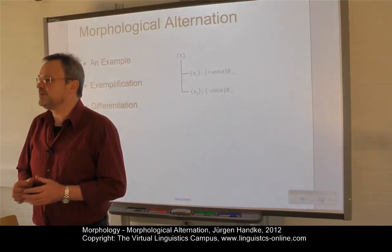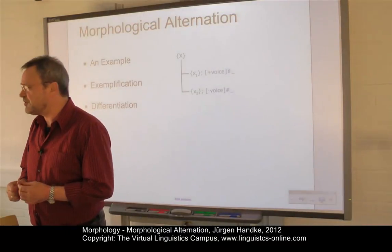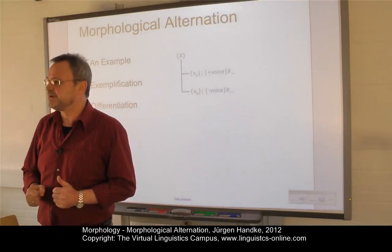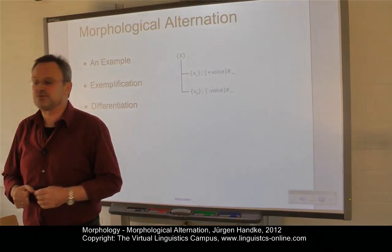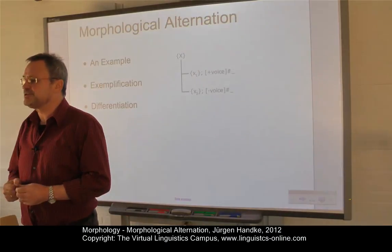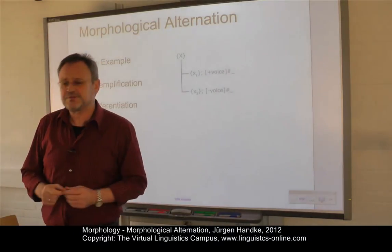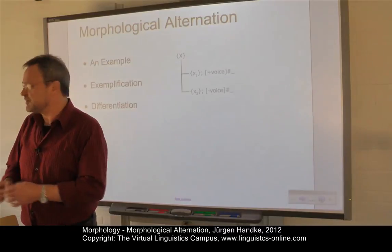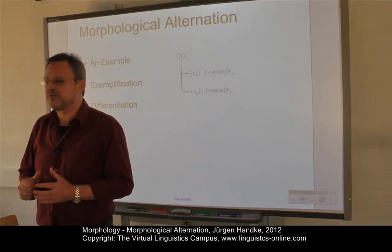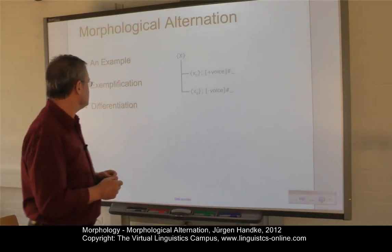One of the most common complications of simple morphological analysis is that morphemes may have different shapes under different circumstances. This phenomenon is referred to as morphological alternation. The subfield within morphology is called allomorphy. Languages differ enormously with regard to allomorphy. For this reason, this unit exemplifies the phenomena of morphological alternation not only on the basis of English, but in a cross-linguistic fashion.